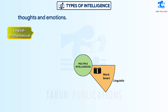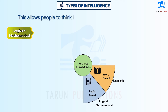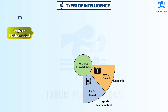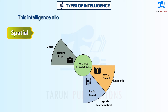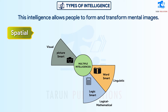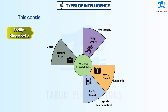Logical-Mathematical intelligence allows people to think logically and interpret symbols to solve mathematical problems. Spatial intelligence allows people to form and transform mental images. Bodily-Kinesthetic intelligence consists of the use of the body flexibly and creatively.